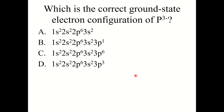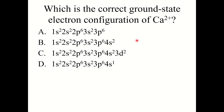Knowledge check: what is the correct ground state electron configuration of P3− (phosphide anion)? The correct answer is C: 1s2, 2s2, 2p6, 3s2, 3p6. Neutral phosphorus is 1s2, 2s2, 2p6, 3s2, 3p3. Phosphorus gains 3 electrons, filling up the 3p subshell to give 3p6.